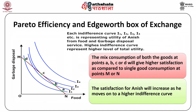The indifference curves representing food and garbage disposal services on their axes for Anish and similarly for Bina are normal negatively sloped indifference curves satisfying all their properties discussed in microeconomics textbooks. The mixed consumption of both goods at points A, B, C, or D will give higher satisfaction compared to single good consumption at points M or N. Satisfaction for Anish increases as he moves to a higher indifference curve.